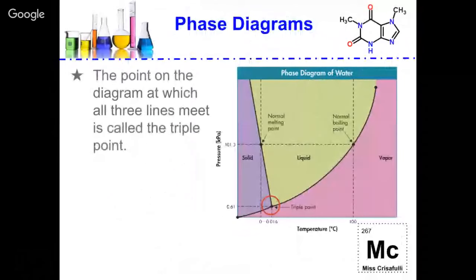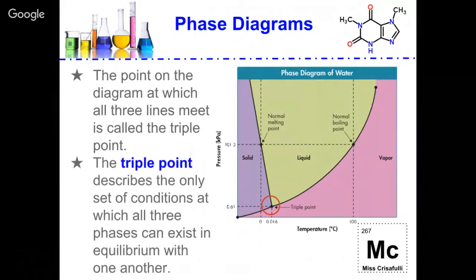The point at the diagram which all three lines meet is called the triple point. The triple point describes the only set of conditions at which all three phases can exist in equilibrium with one another.